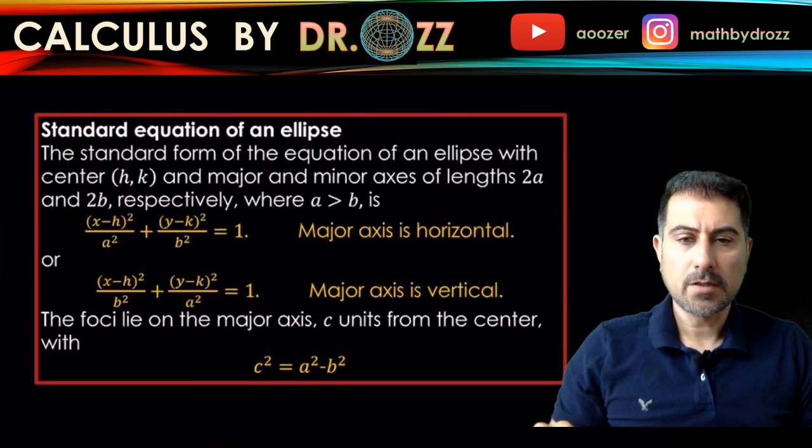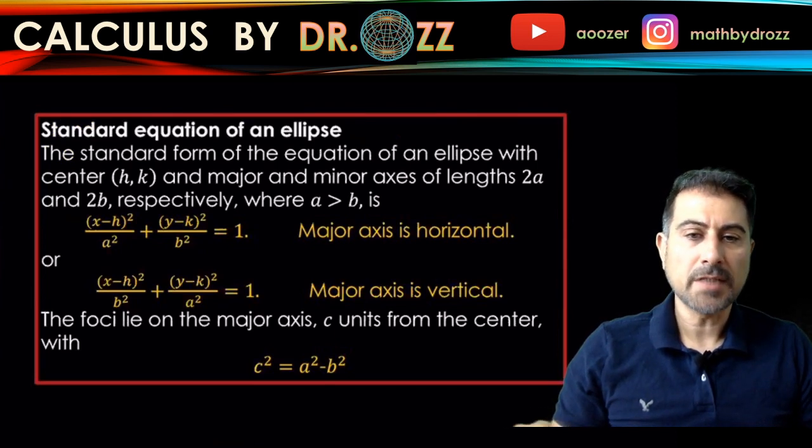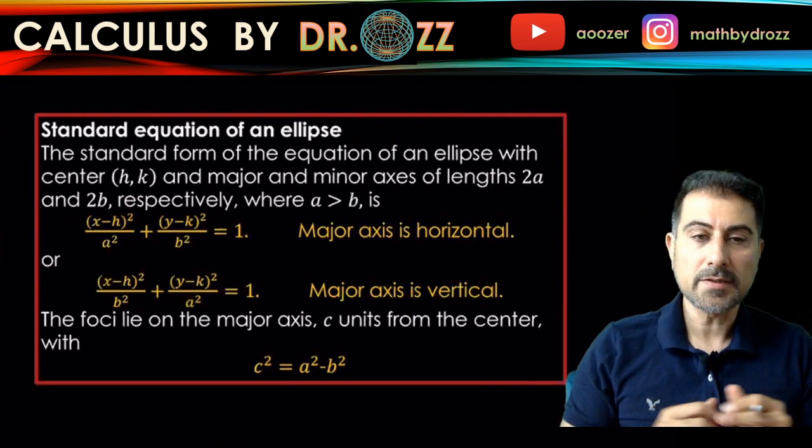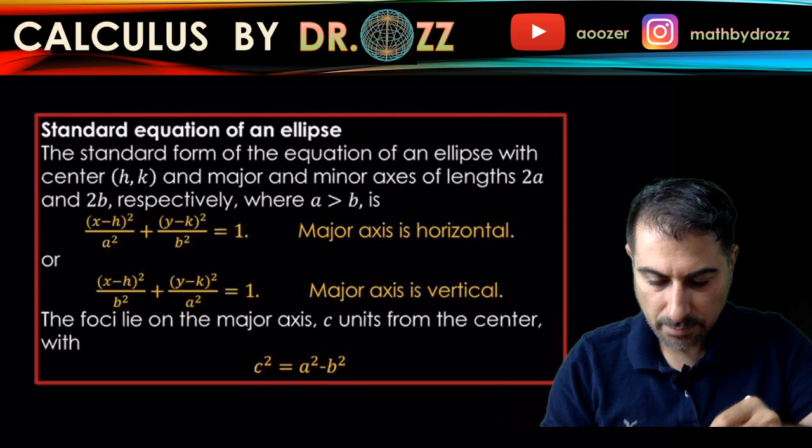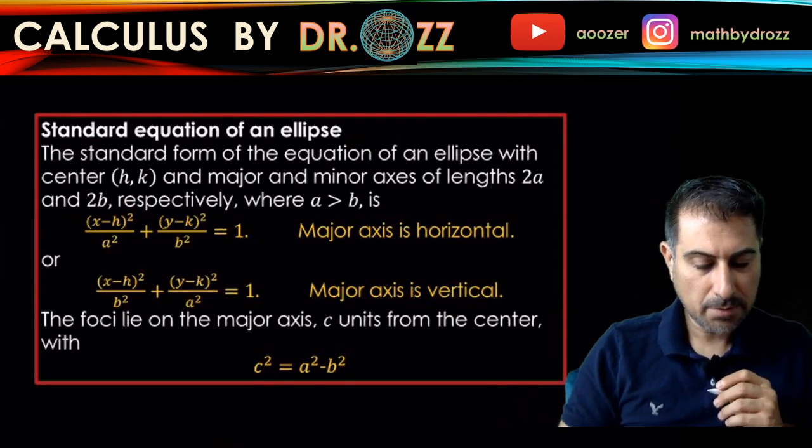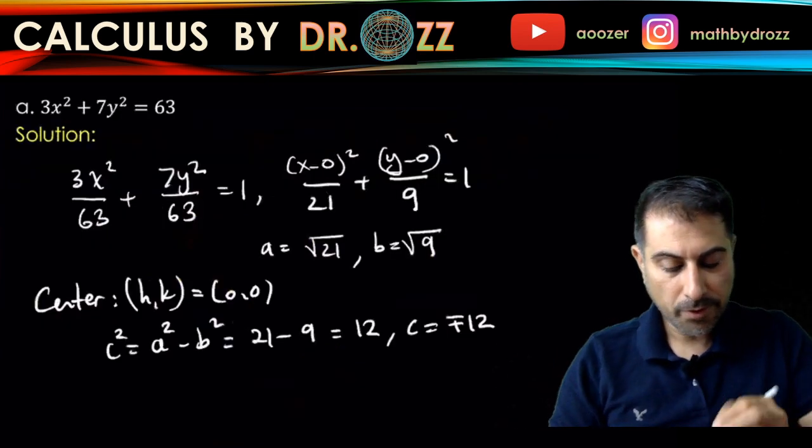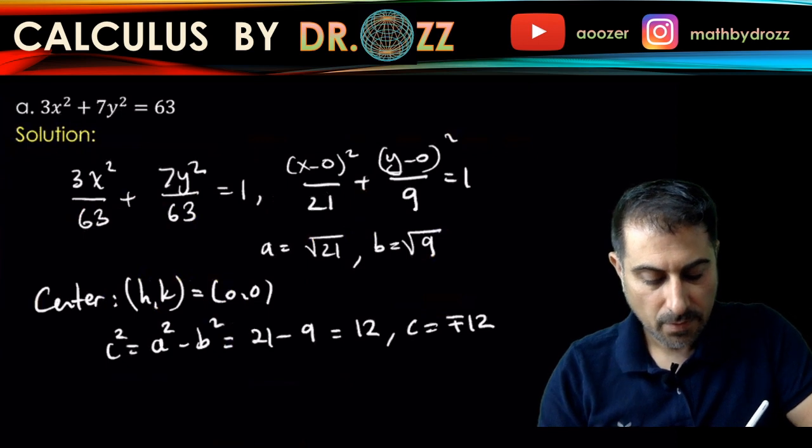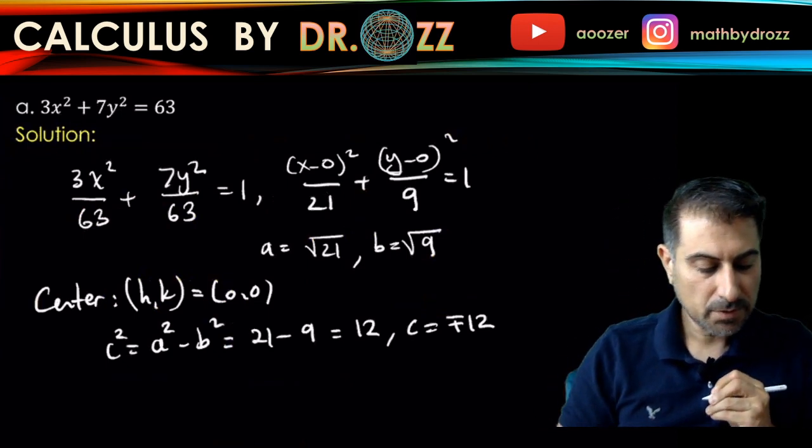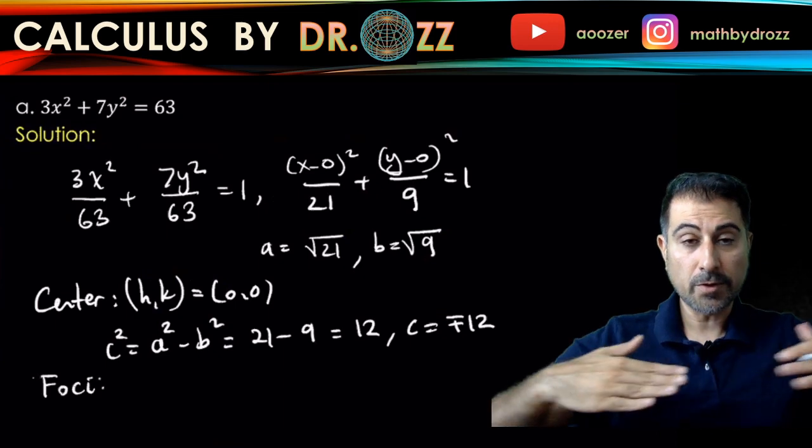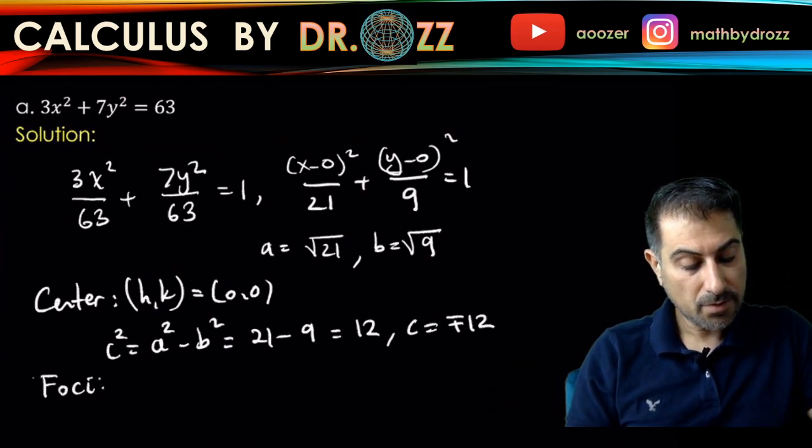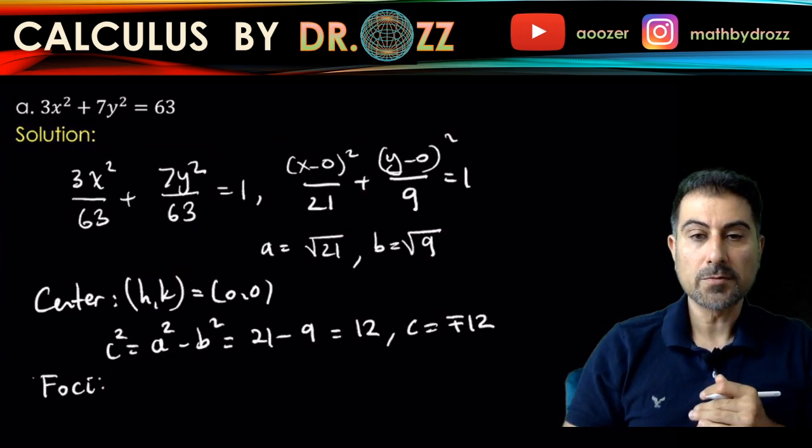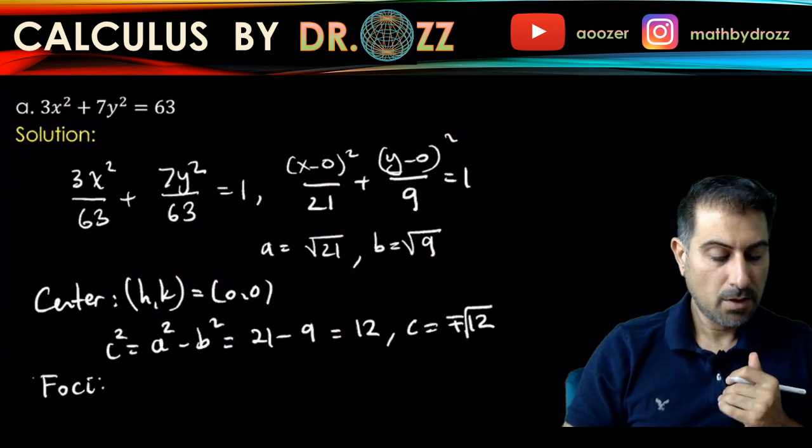And the foci are C units from the center to the left to the right in this case because the major axis is horizontal. So let's go back to, let's go back to here and then let's try to come up with the coordinates of foci. Okay. So foci, so since the center is like 0, 0 and we're going in the X direction, let's say, this is, by the way, a square root of 12, I'm sorry. That's C squared, right? So C is square root of 12.